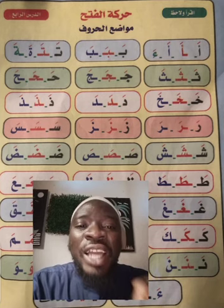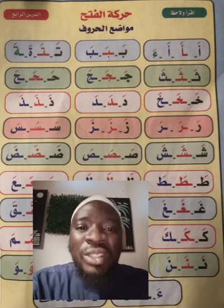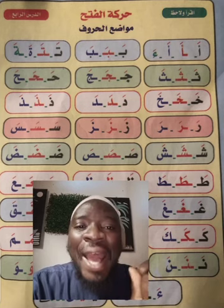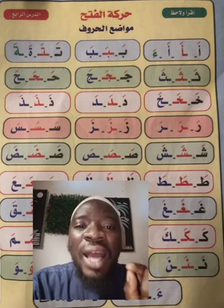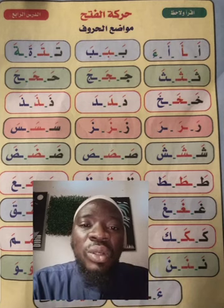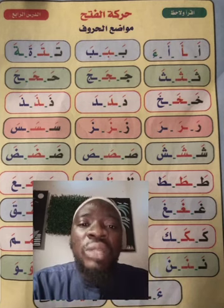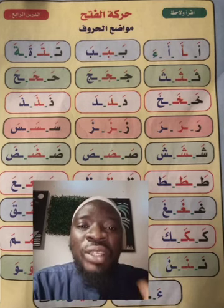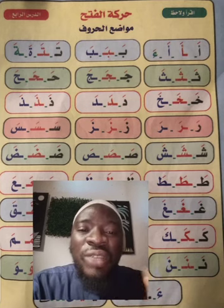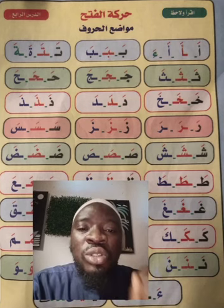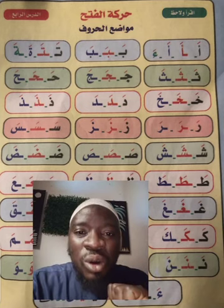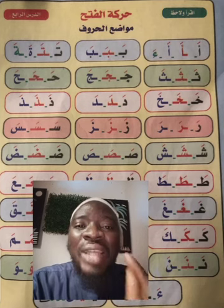The first one is Alif Hamza. You can see that Hamza is written upon Alif. All of them, in the different forms, take Fathah and they sound A. The first form is A at the beginning, the second one is when you have it in the middle, the last one is when you have it as the last letter or standing on its own — it also sounds A. Then you can also have the small Hamza on its own; when you have it with Fathah, it also sounds A.